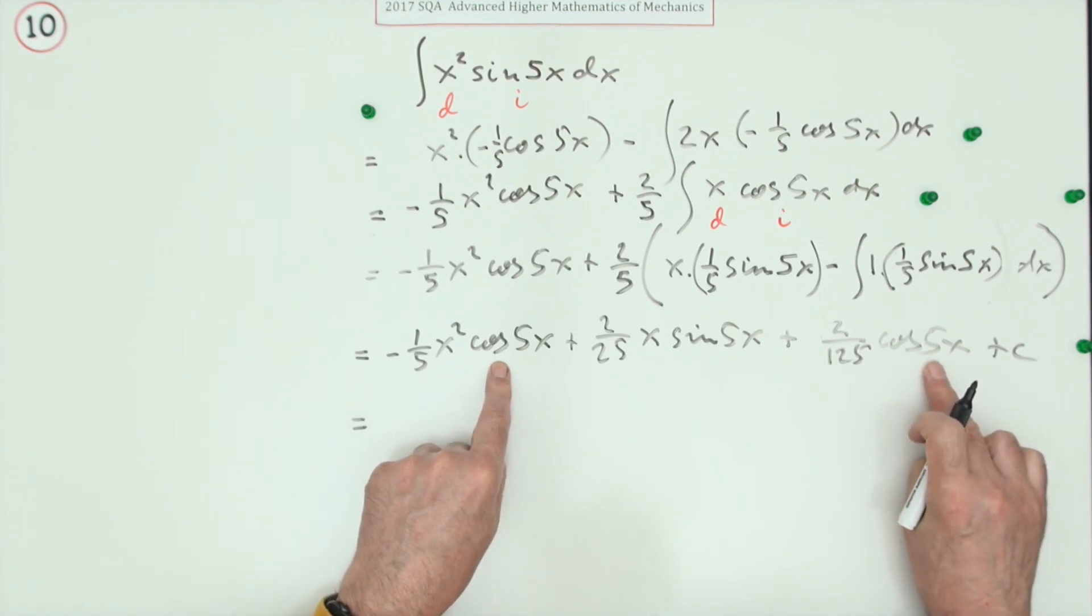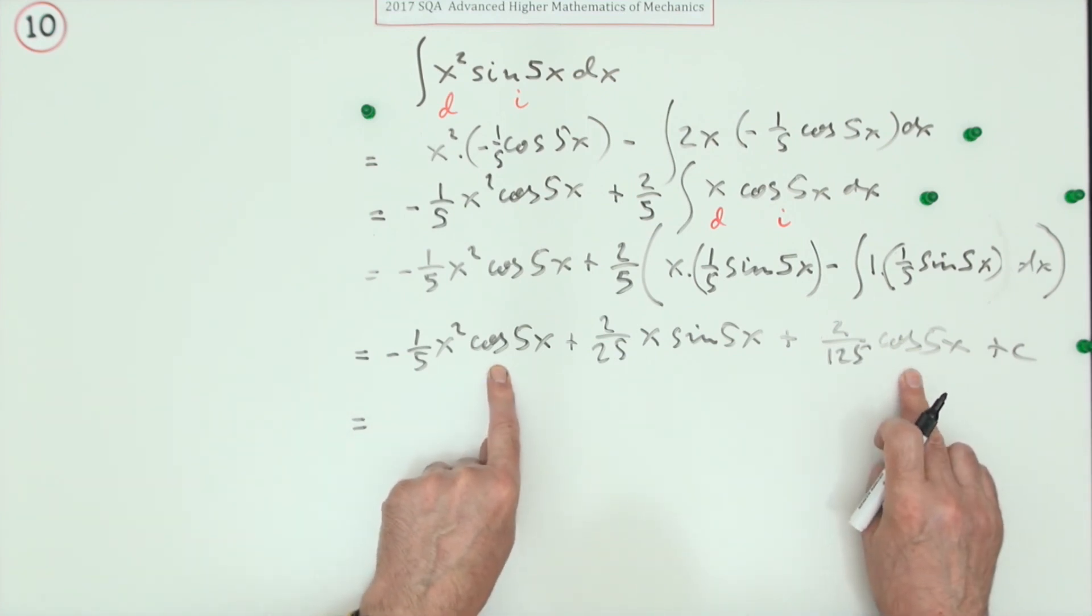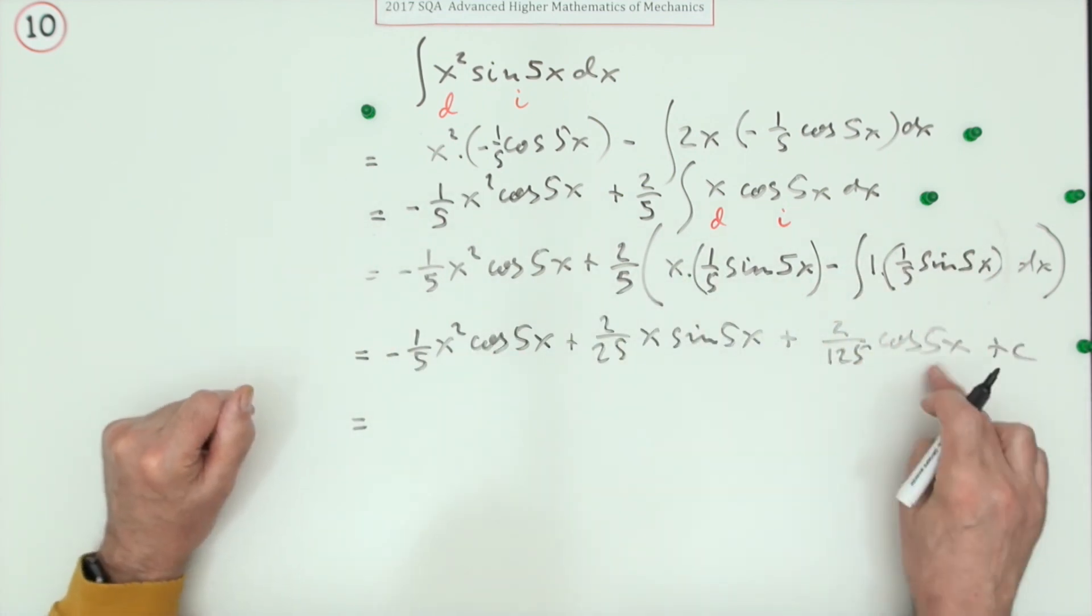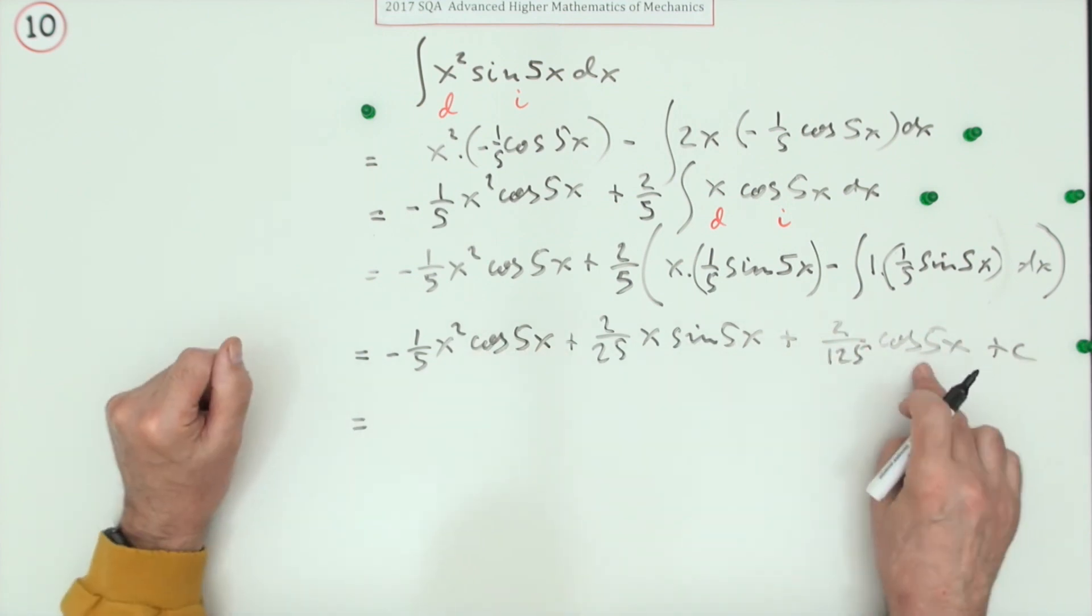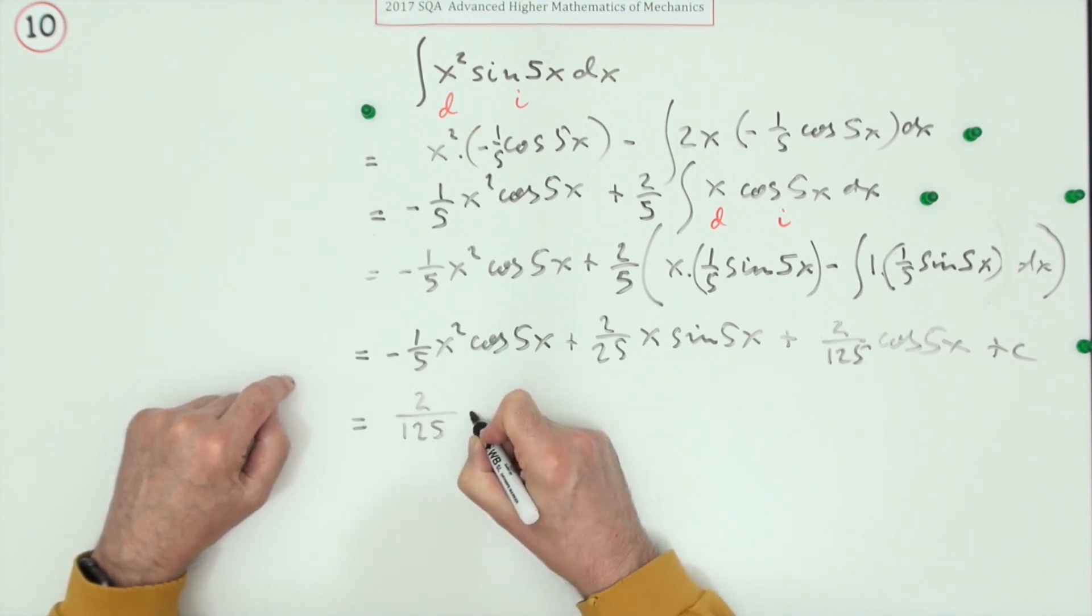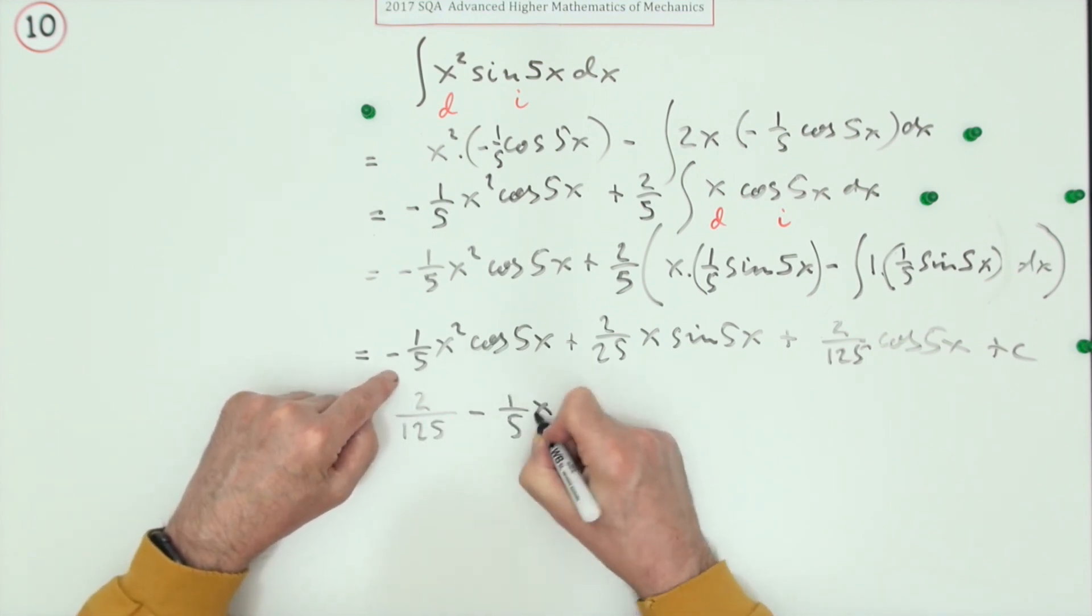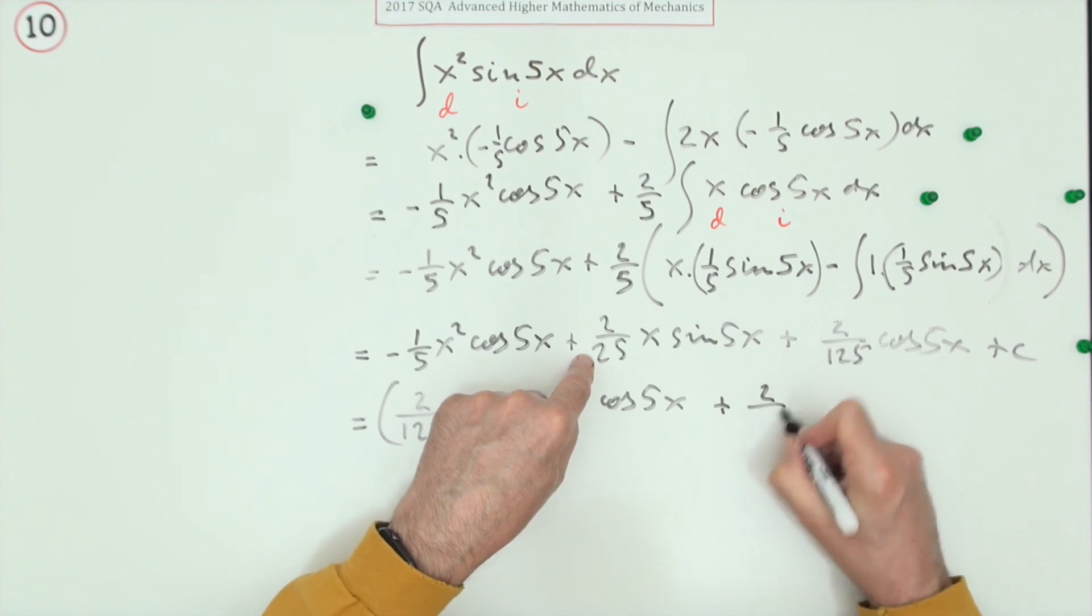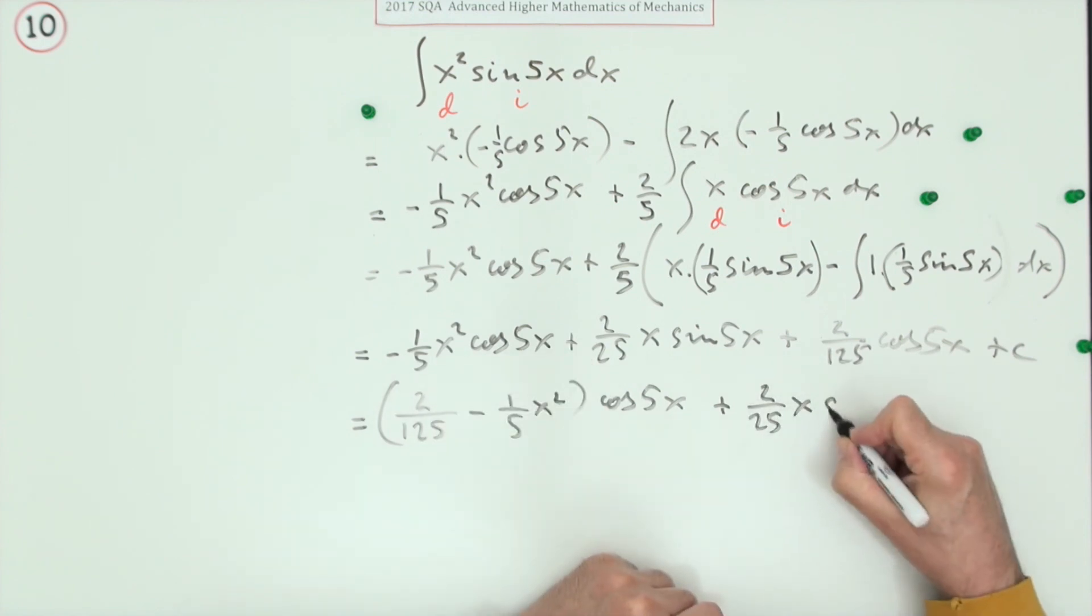Now this could be tidied up because there are two terms in cos 5x. I'm not sure if leaving it like that would be the final answer for that mark. It'd be as well tidying this up. There's something else you could do, you could take out the worst of the denominators as a common factor for the whole thing, but I think I'll just leave it in because there'll still be two separate parts. So cos 5x has got in front of it 2 upon 125 minus a fifth of x squared, lots of cos 5x, plus 2 upon 25 x sin 5x plus c. That'll do.